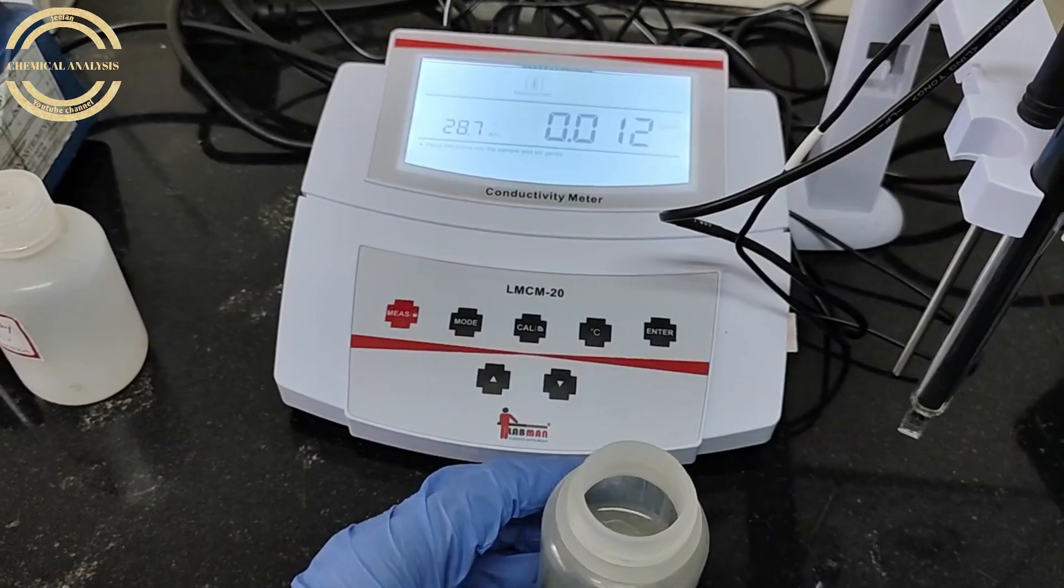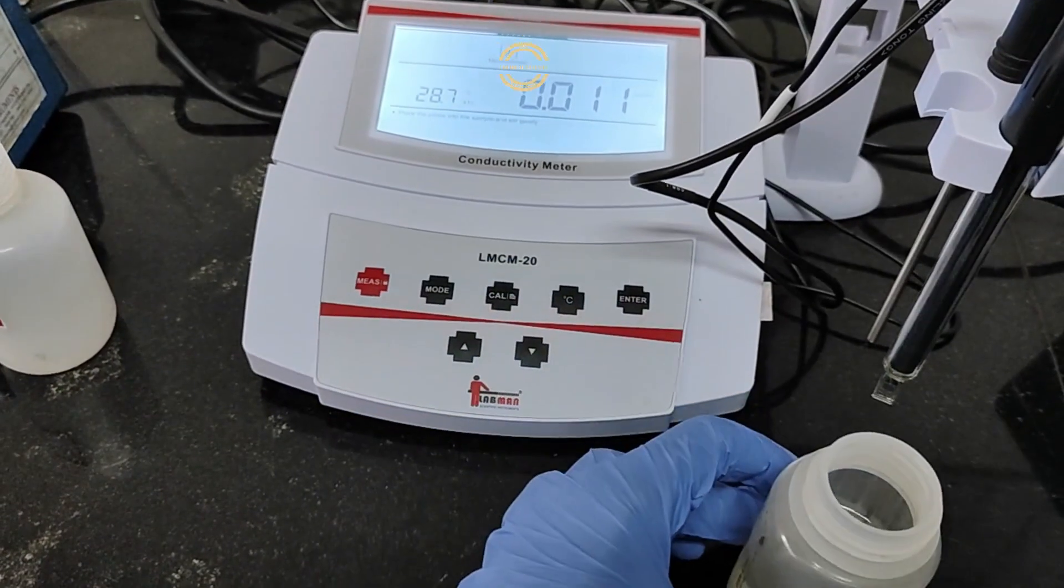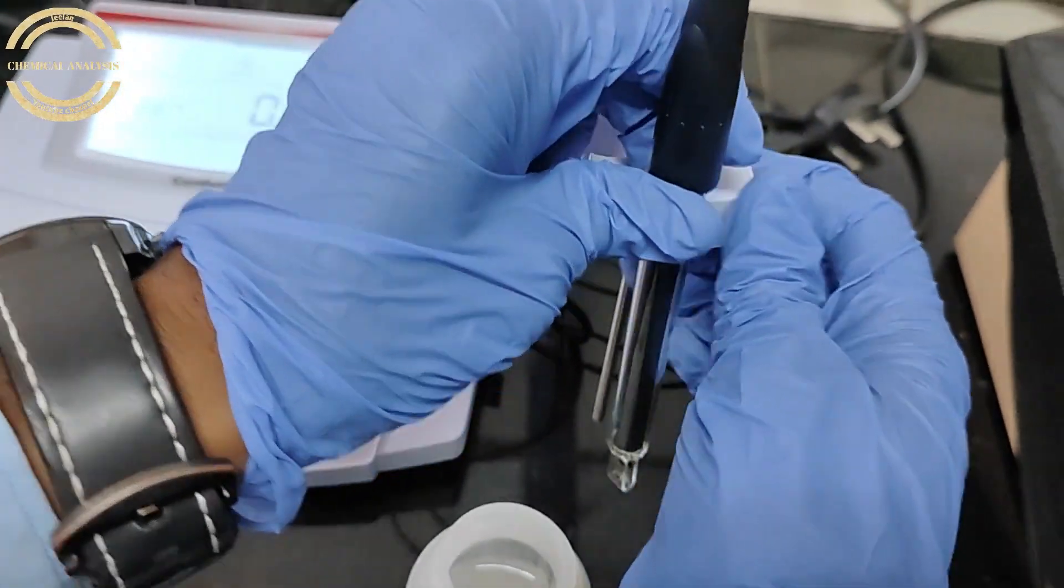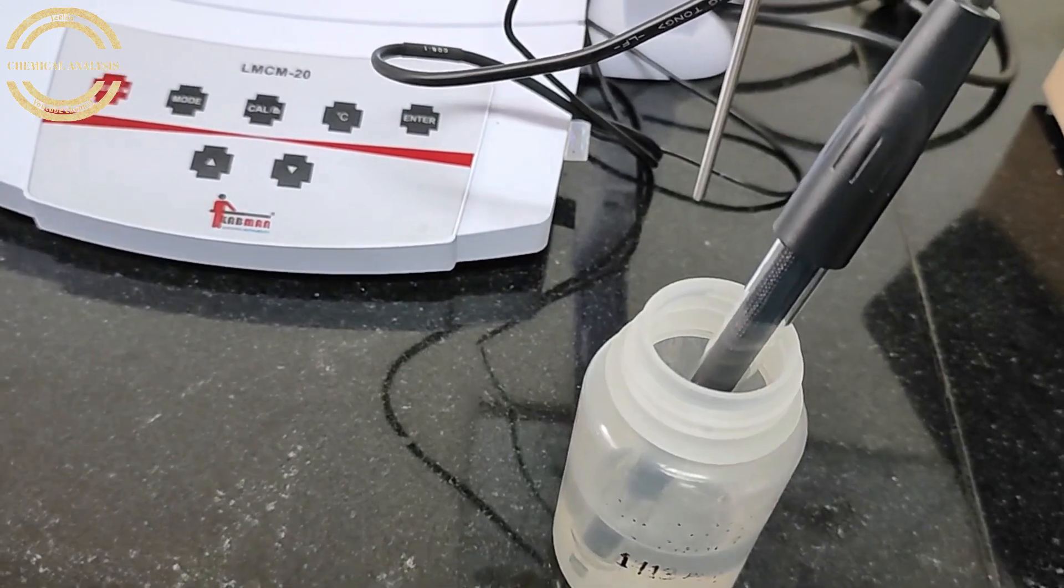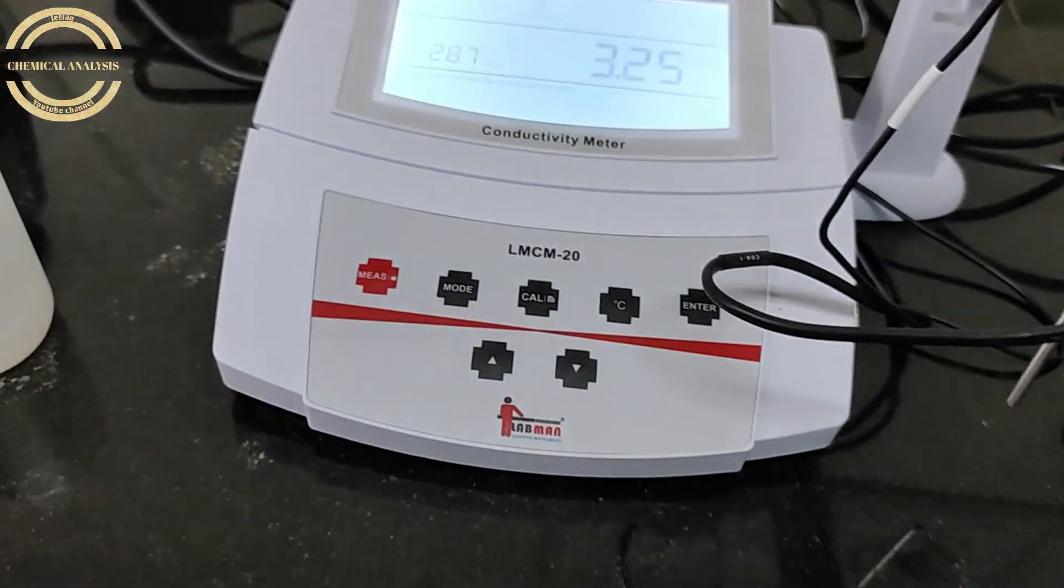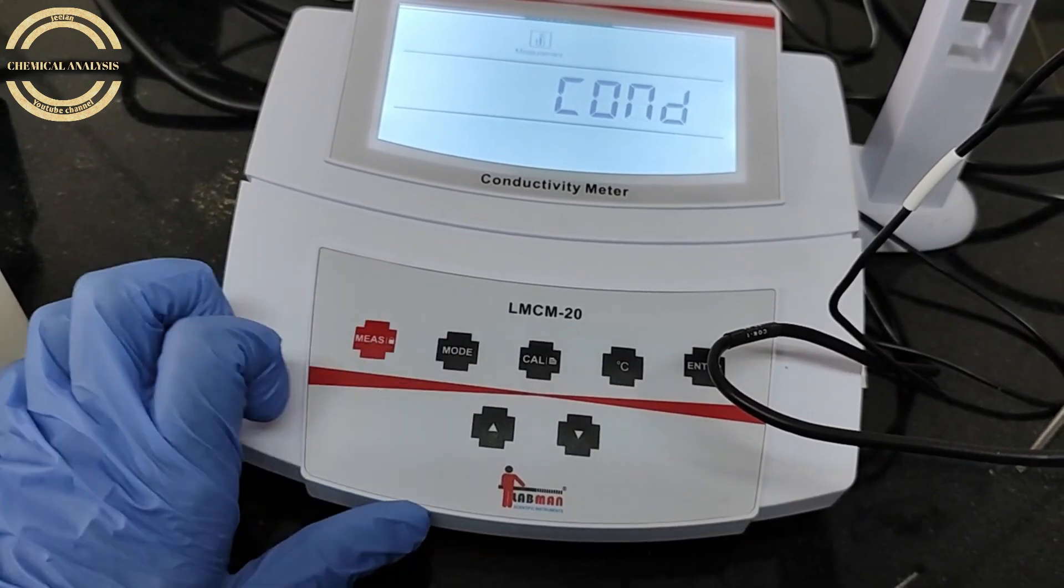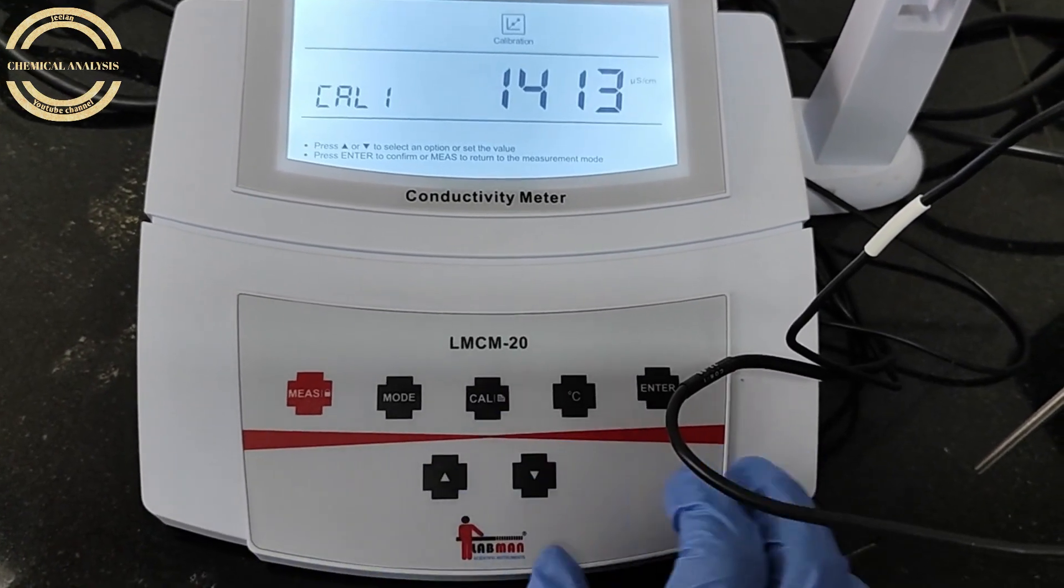Now take conductivity 1413 CRM solution. Put the electrode in the solution. In the instrument, press the mode button and select the conductivity option. Then press the calibration button and select the calibration option.